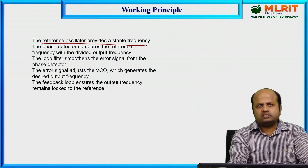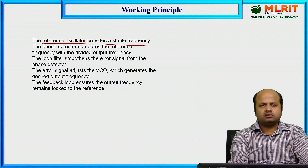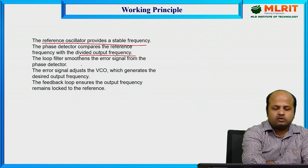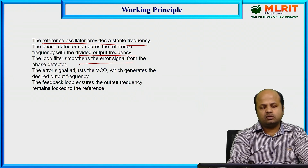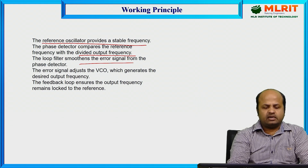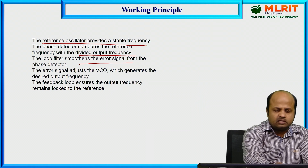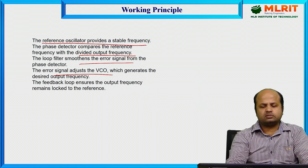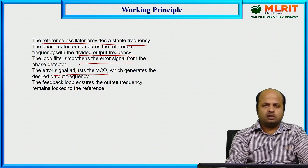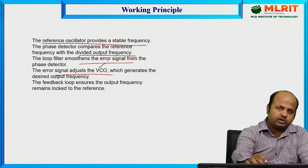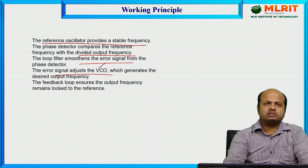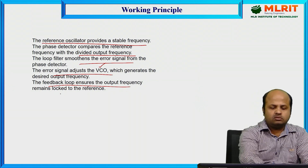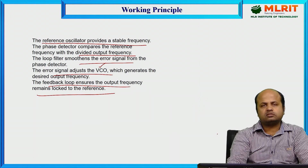The reference oscillator provides a stable frequency. The phase detector compares the reference frequency with the divided output frequency. The loop filter smoothens out the error signal from the phase detector — if there is a phase difference between the generated and reference signals, the loop filter nullifies it. The error signal adjusts the VCO to generate the desired output frequency. The feedback loop ensures the output frequency remains locked to the reference.